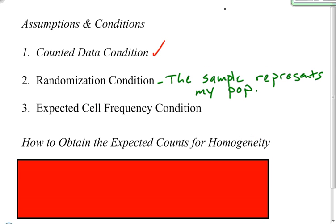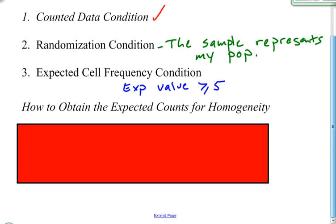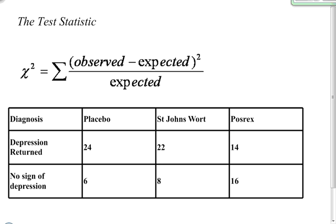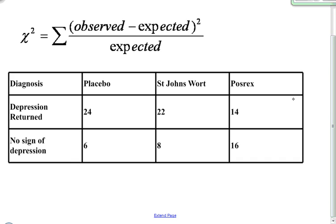The final condition is the expected cell frequency condition. I'm checking whether each expected value is greater than or equal to 5. To find expected counts, there's a formula: the expected count equals the row total times the column total divided by the table total. So it's row total times column total divided by table total.